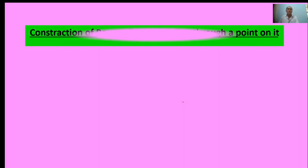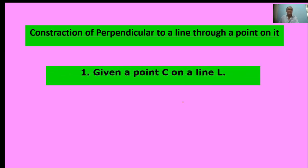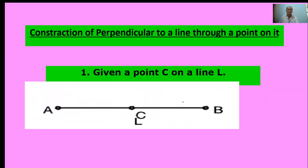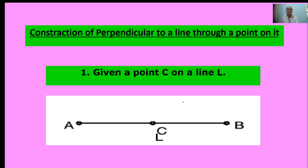Second topic: Construction of perpendicular to a line through a point on it. First, given a point C on a line L. Here is the line. Point C is given.